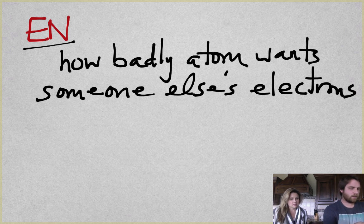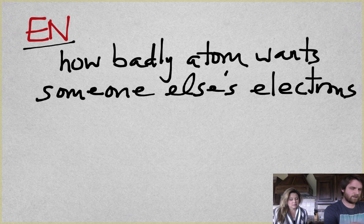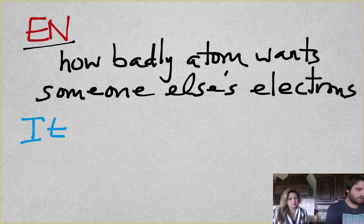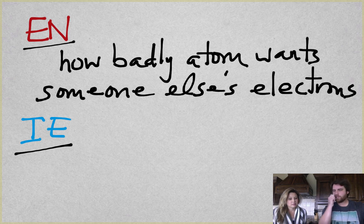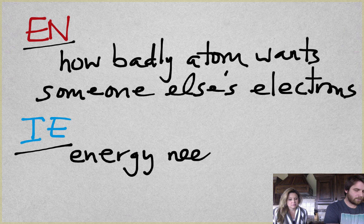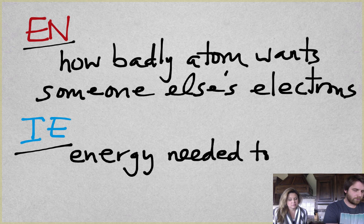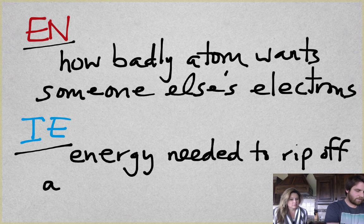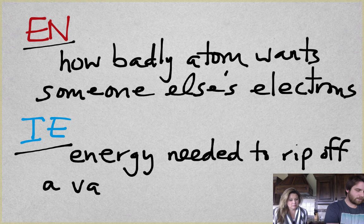Let's actually talk about, where do we want to go next? I want to give you both the definitions first. Ionization energy. Ionization energy is how much energy is required. So energy needed to rip off a valence electron.